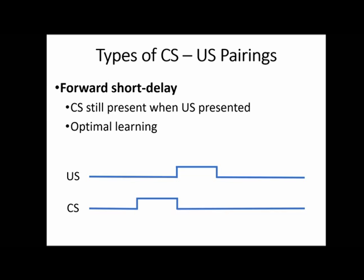Our next topic is something we've already kind of talked about but haven't realized we've talked about — the types of CS-US pairings. How are we presenting the conditioned stimulus and the unconditioned stimulus? How are we pairing them? This is mostly going to be talking about the order and the timing of our stimuli. We have four different types of pairings, some of which are going to work better than others.